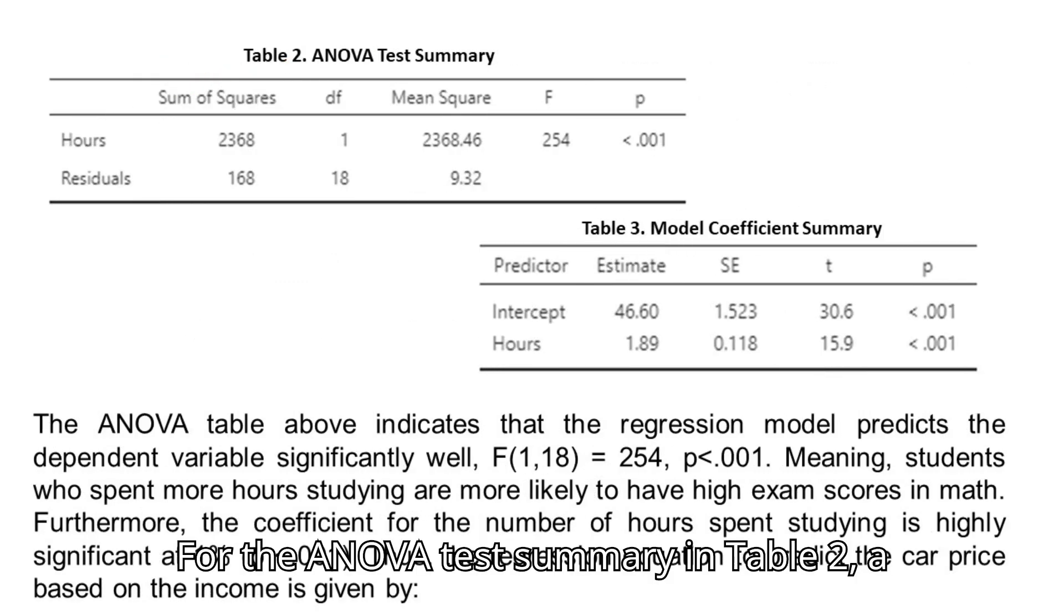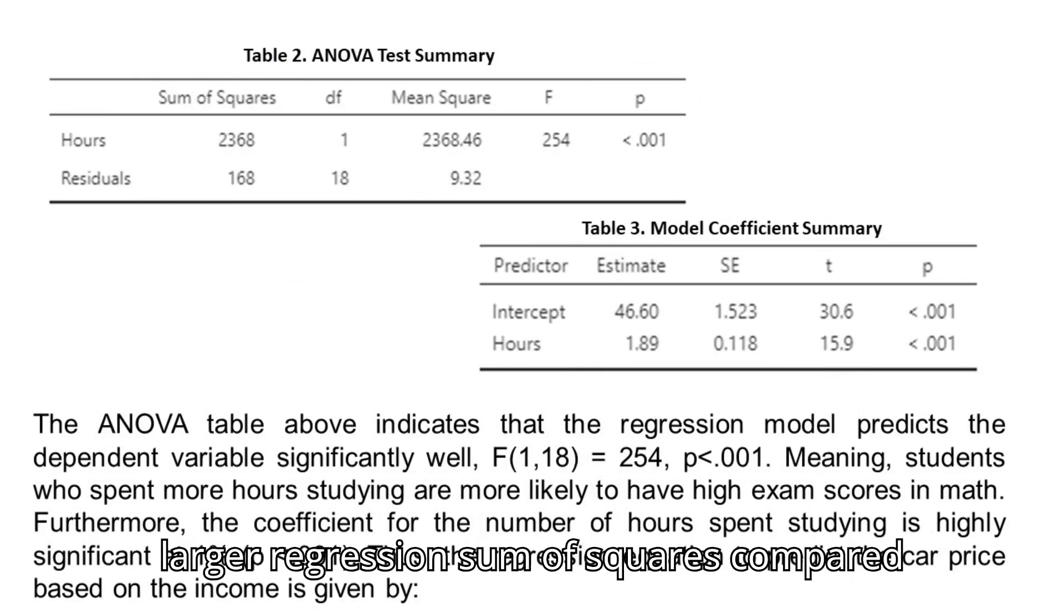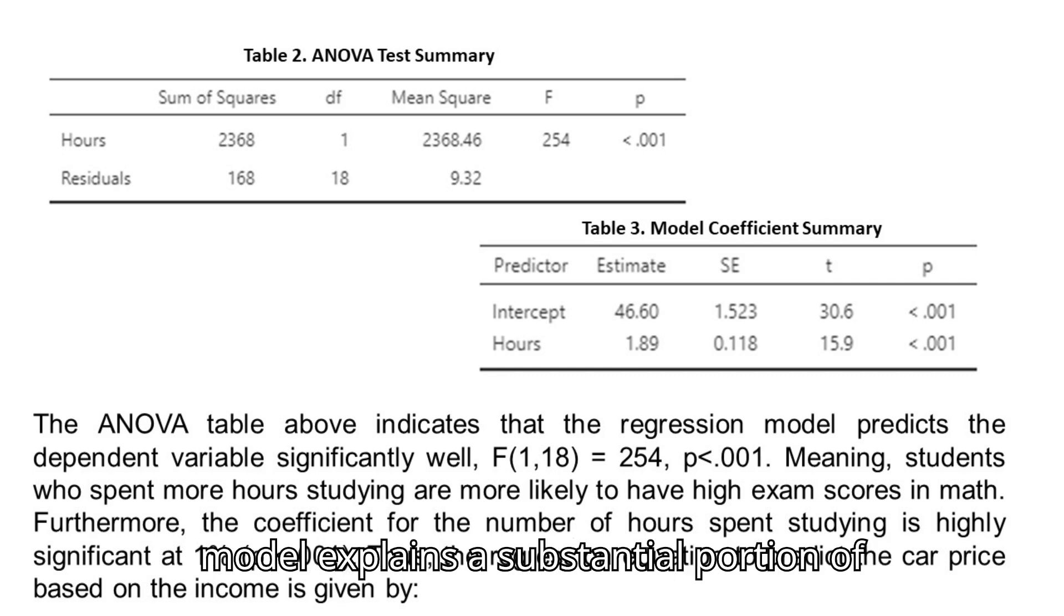For the ANOVA Test Summary in table 2, a larger regression sum of squares compared to residual sum of squares suggests the model explains a substantial portion of the variability. On the other hand, a high F-statistic and a low p-value provide evidence that the regression model is statistically significant, meaning the relationship between the independent and dependent variables is unlikely due to chance.